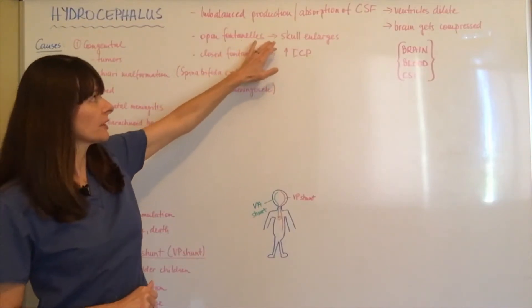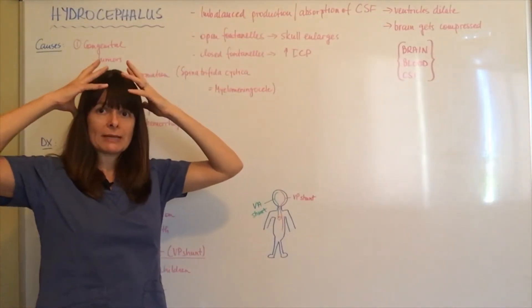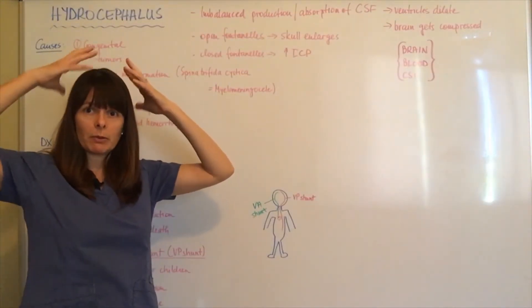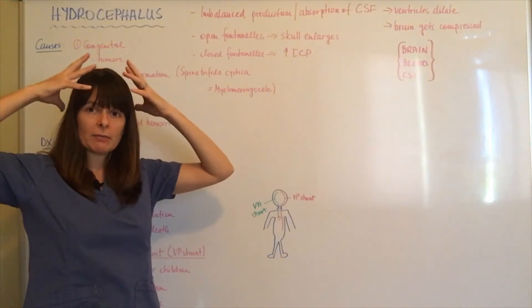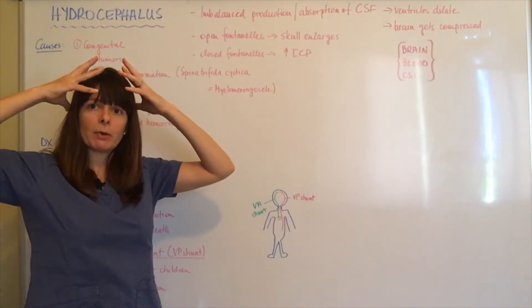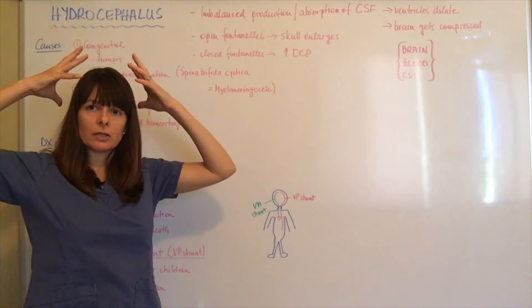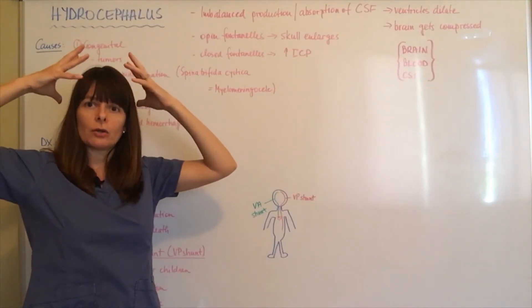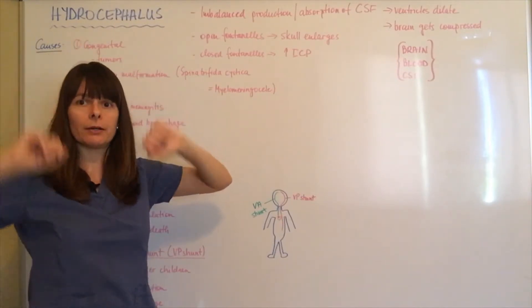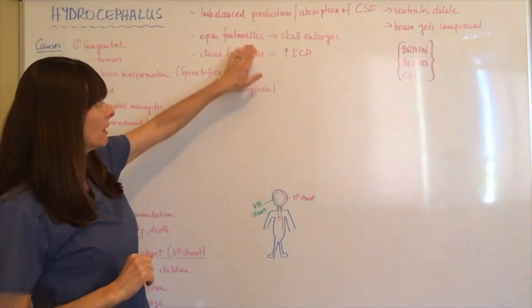When there's open fontanelles, the skull will basically enlarge—you will see bulging fontanelles. Then over time, because the bones of the skull are still formable and pliable, it will result in hydrocephalus. Their skull cavity, their whole head, will get bigger.